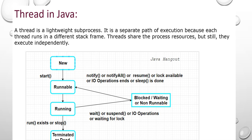Threads don't depend on each other. We will see what are the life cycle states of Thread. First, new and runnable, running, then blocked state or wait — we can call non-runnable. After that, it will go back to runnable and run again. Once runnable exits or stops, it will go to terminated or dead state.